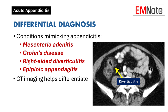Differential diagnosis: When evaluating suspected appendicitis, it's essential to consider other conditions that may mimic its presentation. These include mesenteric adenitis, Crohn's disease, right-sided diverticulitis, and epiploic appendicitis. Differentiating these conditions relies on identifying a normal appendix alongside enlarged lymph nodes or other characteristic imaging features.